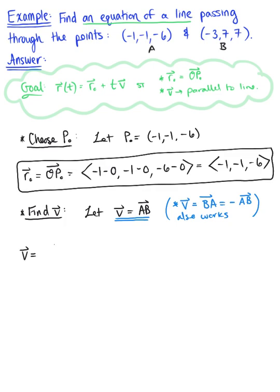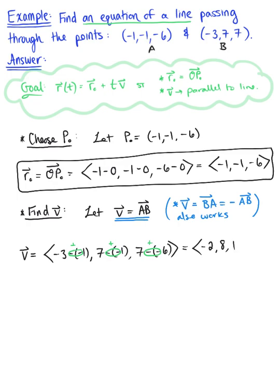So we're going to use the directed line segment from A to B. Vector v, terminal minus initial: we have negative 3 minus negative 1, then 7 minus negative 1, then 7 minus negative 6. Being mindful that negative times negative produces a positive value: negative 3 plus 1 gives us negative 2; 7 plus 1 is 8; and 7 plus 6 is 13. So our parallel vector is negative 2, 8, 13.